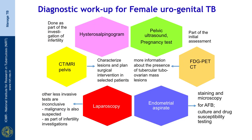Regarding female genital tract tuberculosis — common in our country but difficult to diagnose — as part of initial assessment or investigation for infertility, hysterosalpingogram may be done, and pelvic ultrasound and pregnancy test are commonly used. CT/MRI of the pelvis can help in characterizing the lesion and guiding interventions and biopsy. FDG PET-CT scan gives more information about tubercular tubo-ovarian masses. When less invasive tests are inconclusive or malignancy is in mind, laparoscopy should be done, and endometrial aspirate should be sent for AFB smear, culture and drug susceptibility testing.